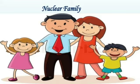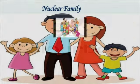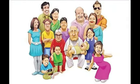A big nuclear family consists of father, mother and their more than two children. एक big nuclear family में father, mother और दो से अधिक बच्चे होते हैं। A joint family consists of father, mother, their children, grandparents, uncle, aunt and cousin, sisters and brothers.